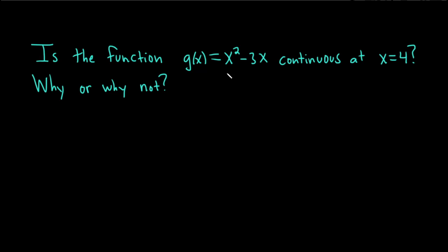Is the function g of x equals x squared minus 3x continuous at x equals 4, why or why not? So let's explain this. Basically, the explanation is the following.